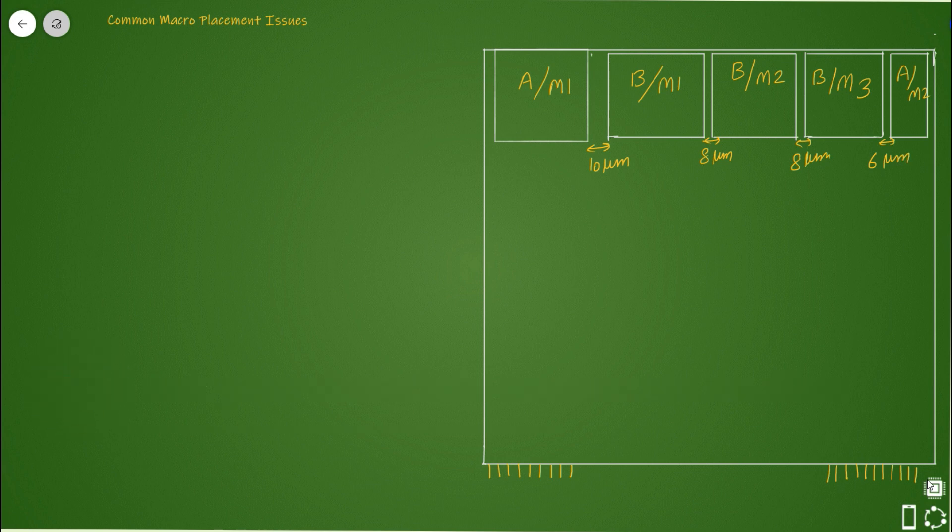The issues you might see because of this: first, congestion-related issues. Congestion will come up, mostly around the macros - around all the macro edges. Second, you'll see congestion because of less spacing.